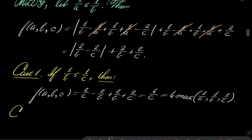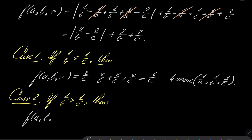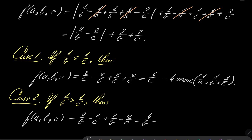Case two: if 1/b > 1/c, then f(a, b, c) equals |2/b - 2/c| + |2/b + 2/c|, which gives (2/b - 2/c) + (2/b + 2/c) = 4/b. Again, this equals four times the maximum of 1/a, 1/b, 1/c.